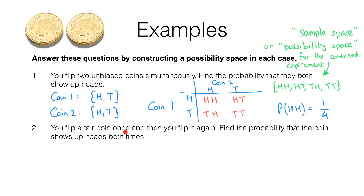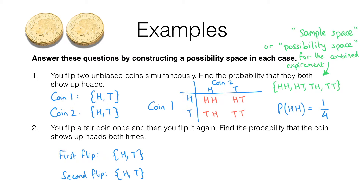This time we flip a fair coin once and then we flip it again. So instead of having two separate coins we flip the same coin twice, and we need to find the probability that the coin shows up heads both times. This is actually going to give us exactly the same answer. Instead of coin one and coin two, we've got the first flip and the second flip, but the sample spaces in both cases are still the same. The first flip could give us heads or tails, the second flip could also give us heads or tails, and because we've got a fair coin these two outcomes are equally likely.